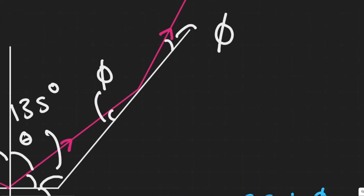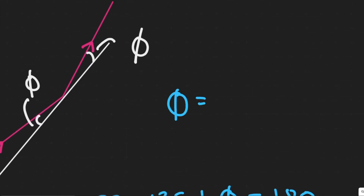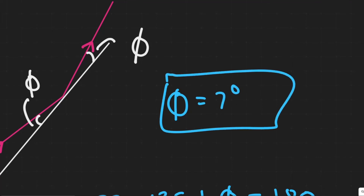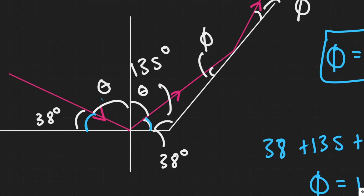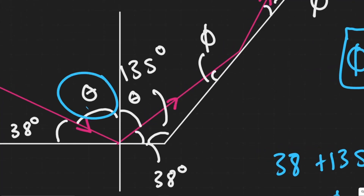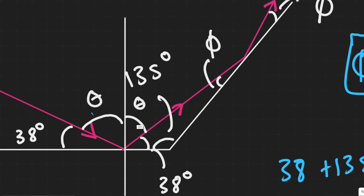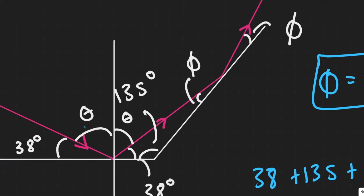So phi here is 7 degrees based on the law of reflection — these two angles are the same — so our answer for angle phi is 7 degrees. This problem isn't that difficult as long as you know the law of reflection. The main idea is that the incoming and outgoing angles relative to the surface are the same. Understanding that this angle equals this one, then using the laws of triangles to solve for phi, is the key method here.